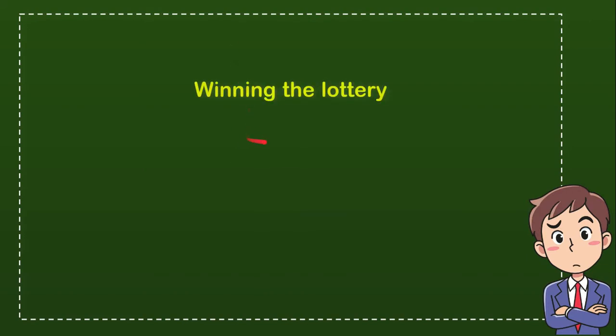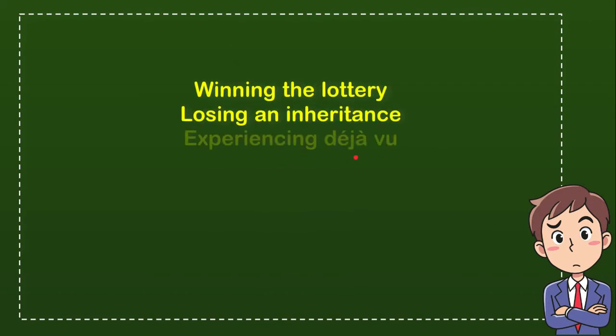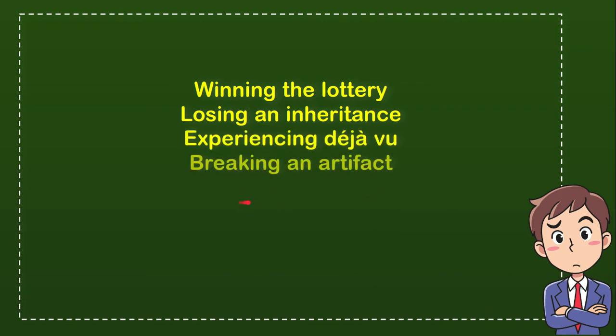The first option is winning the lottery. The second option is losing inheritance. The third option is experiencing deja vu. And the last option is breaking an artifact.